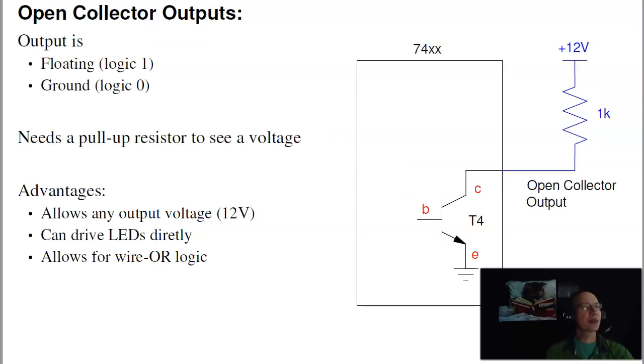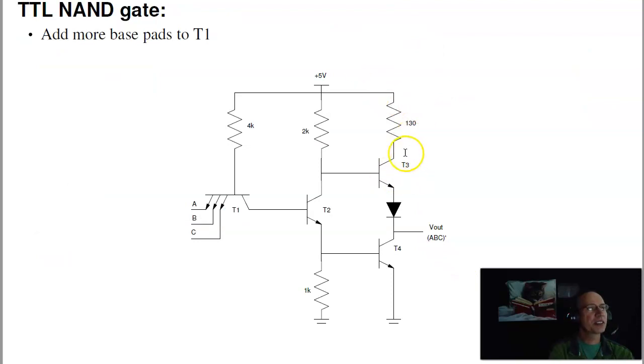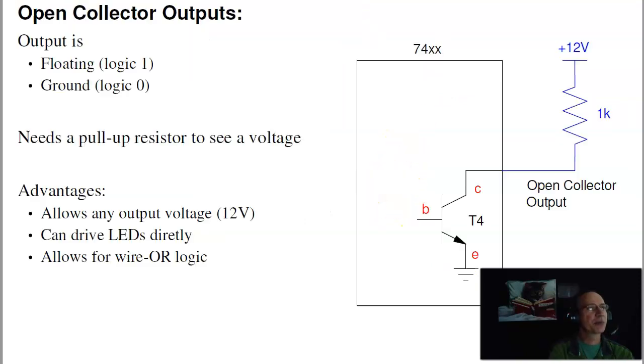One last thing to mention about TTL logic and the 7400 series. Some of them are open collector outputs. What that means is, on the last stage, instead of having this T3 and a diode, they just eliminate them and just give you T4. The output of this gate is then either high impedance, when this is open, or short to ground, when it's turned on or saturated. If I look at this with a voltmeter or an oscilloscope, I won't see anything. I just see low impedance, high impedance. To see a voltage, I need a pull-up resistor. The reason for that, for using open collector outputs, is it's very easy to change logic levels. If I don't want to have 5 volts out, but I want 12 volts out, just pull it up to 12 volts. If I want a different resistance or different current, change that resistor.